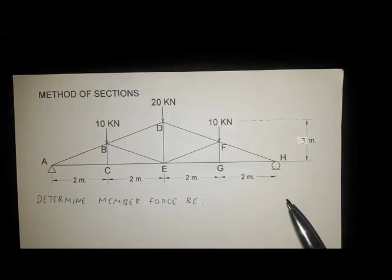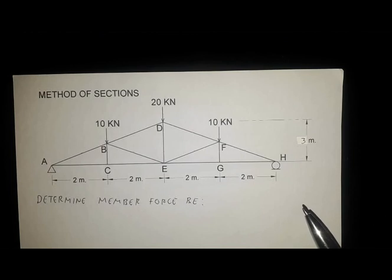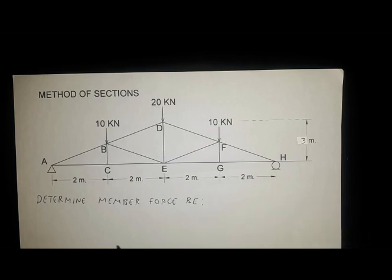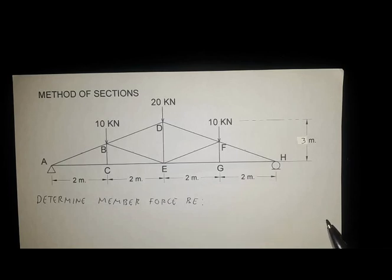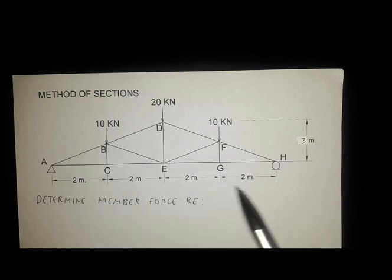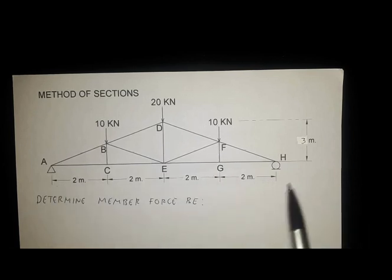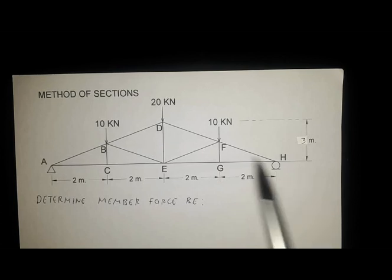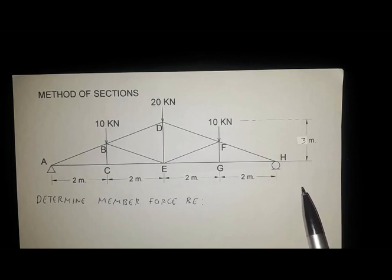The method of sections is used to immediately determine member forces without passing through different joints. It is done by cutting a section throughout the structure. Unlike the method of joints, we don't have to pass through all the joints in order to determine the force of a member. This example was also analyzed in our previous video using the method of joints.